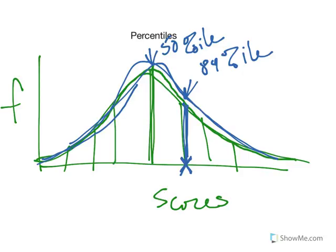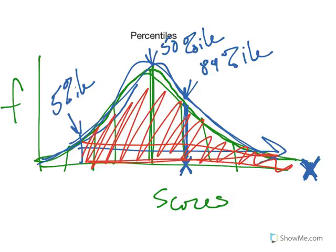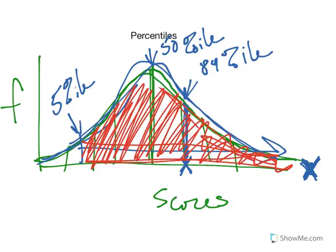Remember John? John scored way, way up here — he's in the tail, the good tail. You do not want to be in the 5th percentile. That would be somewhere over here on the low end, which would essentially mean that almost everybody did better than you — all these people over here did better than you. So it's not a good thing to be in a low percentile. We want to be in a high percentile. That's what a percentile rank is — pretty simple, super useful. In general, you want them to be bigger. Bigger is better.